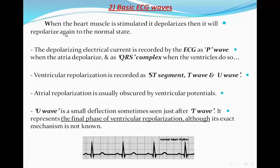Basic ECG waves: when the heart muscle is stimulated by the electrical impulse, it depolarizes and then repolarizes again to the normal state. The depolarizing electrical current is recorded by the ECG as a P wave when the atria depolarize, and as a QRS complex when the ventricles do so. The ventricular repolarization is recorded as the ST segment, T wave, and U wave. Atrial repolarization is usually obscured or buried by the ventricular potentials. The U wave, if present, is a small deflection sometimes seen just after the T wave, representing the final phase of ventricular repolarization, although its exact mechanism is not known.